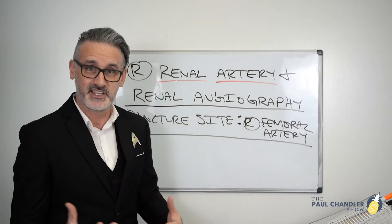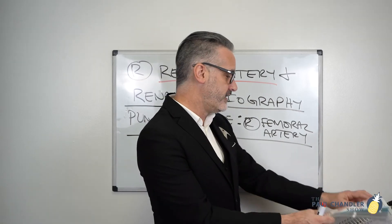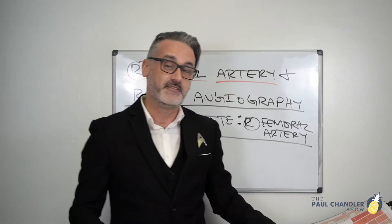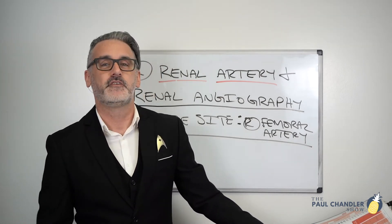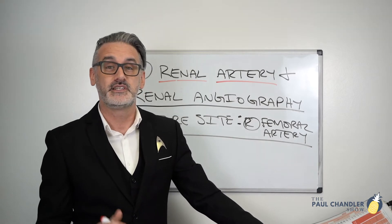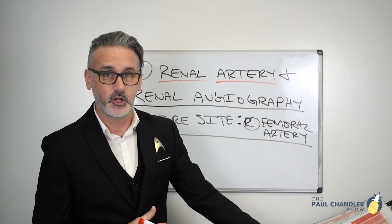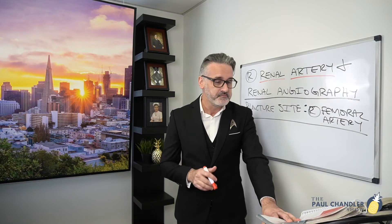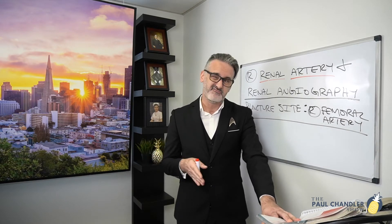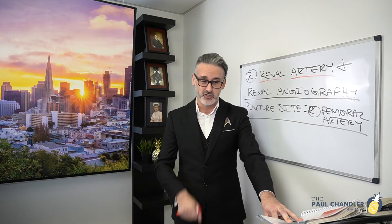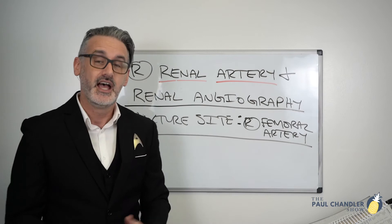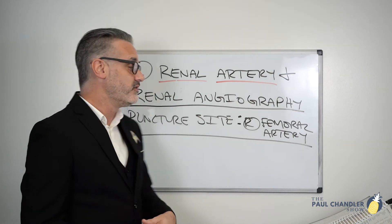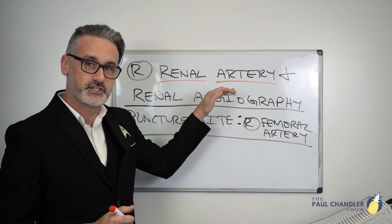The second verification method is Appendix L — L as in Larry — in the back of the CPT book, which takes us to page 856 in the 2020 professional version. It has columns in red for arteries and blue for veins. Scrolling through the columns, we find the word renal (R-E-N-A-L) on page 857, about two-thirds to three-fourths of the way down. Scroll up to the top of that column and it says first order — double confirmation that the renal artery is a first order branch.